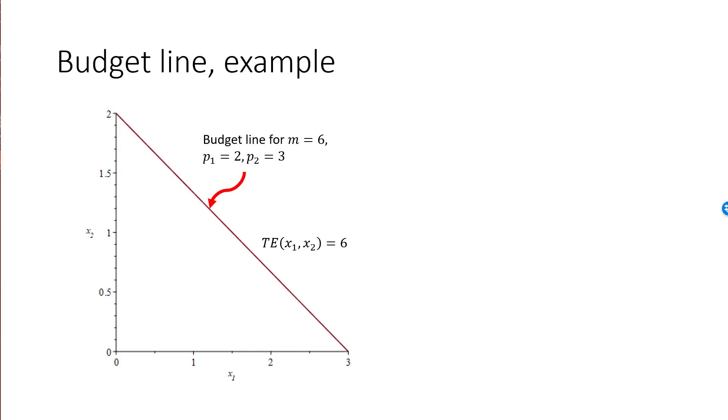Well, we know precisely what this set looks like. Every bundle on a straight line from 0,2 to 3,0 will be in this set that we call the budget line. Graphically, this set is a straight line, and this is why we call it the budget line.